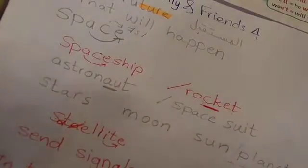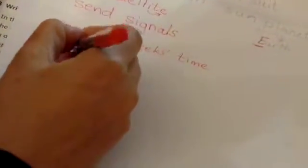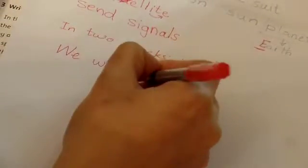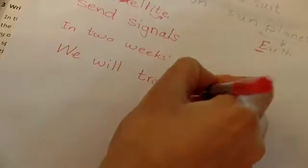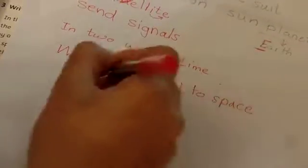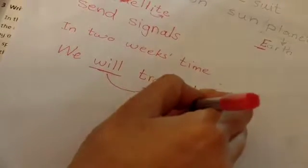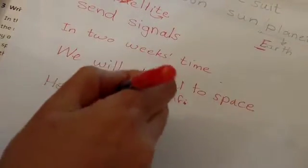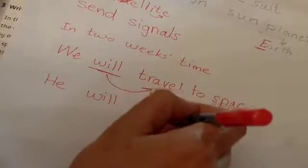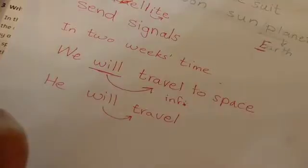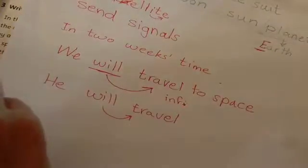Let's look at the grammar lesson — it's about using 'will' to speak about the future. We say: 'In the future, we will travel to space.' Look at what comes after 'will' — we have the infinitive, or the baby verb. For example: 'He will travel' — not 'travels,' not 'traveling.' After 'will,' always use the baby verb.